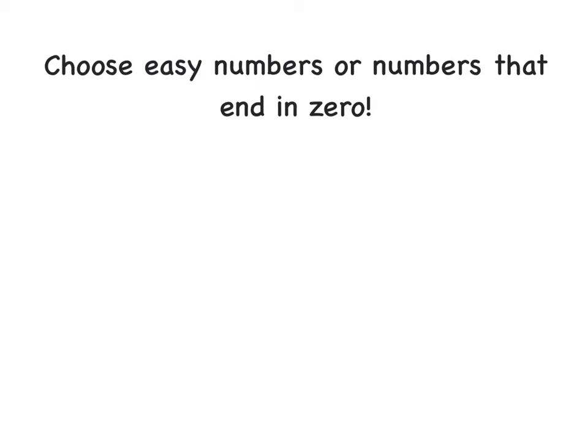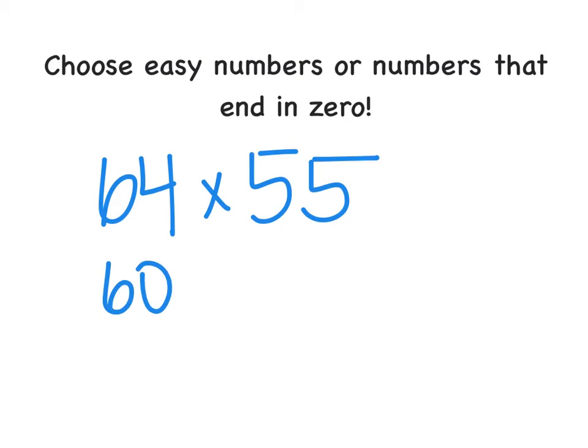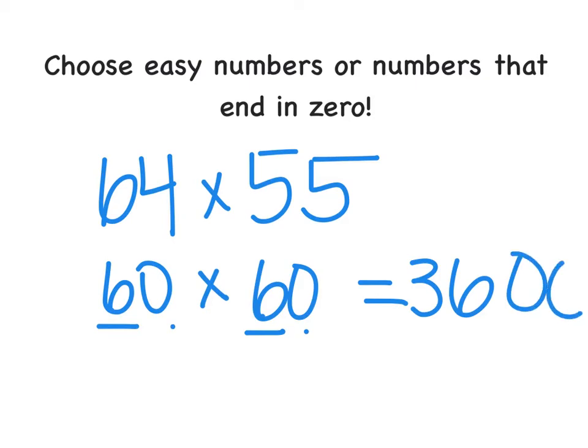Let's look at another example. Let's say I had 64 times 55. Again, I'm going to choose something that's nice and easy for me, and hopefully that ends in zero, because that's easy for us to multiply. So I'm going to do 60 times 60, because 6 times 6 is 36, and I can add my two zeros at the end to get 3,600.